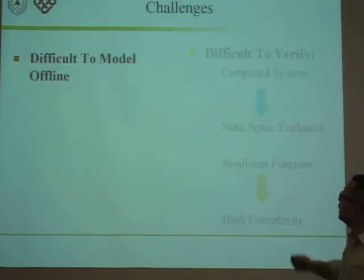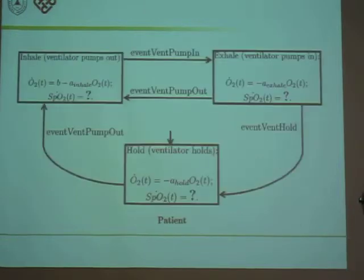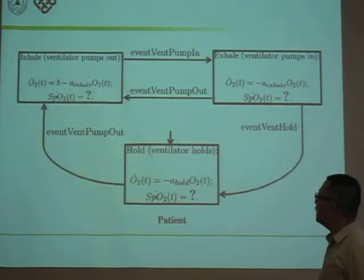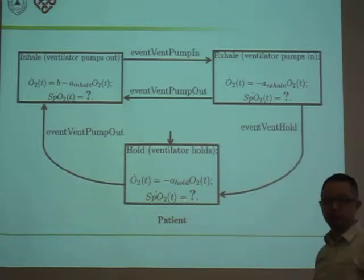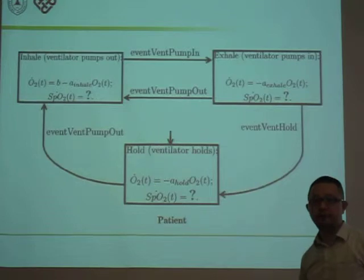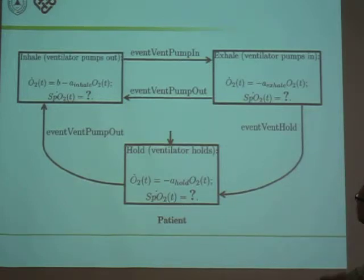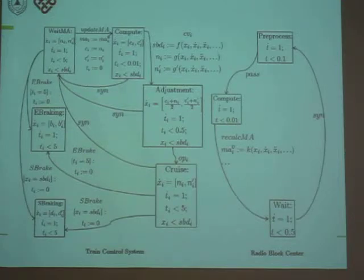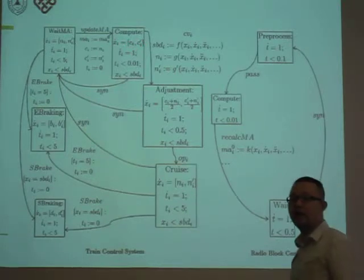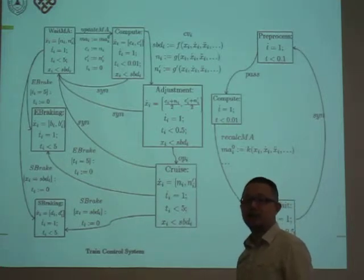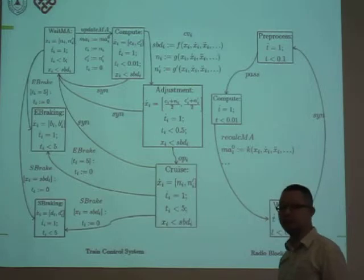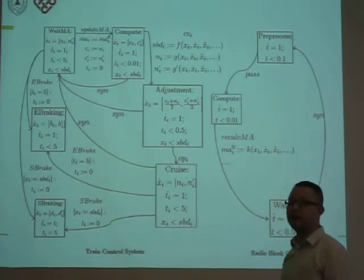When applying this conventional approach, we face two challenges. First, it is often difficult to model state variables offline. For example, the blood oxygen level of the patient is affected by too many factors, such as the patient's age, gender, weight, and even emotional mood. So it's practically impossible for us to predict the blood oxygen level offline using differential equations. Same thing for the train control systems. Although we can give the range of the train velocity offline — the upper and lower bound — the exact value of the train's velocity during runtime is actually determined by the train driver. So it is also impossible to give an accurate offline model for the train control system.